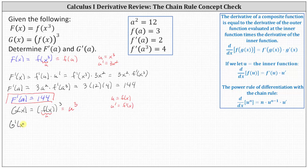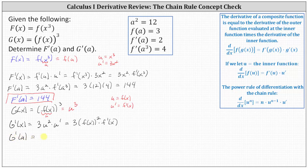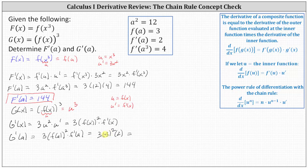G'(x) = 3u² · u', where u = f(x) and u' = f'(x). Therefore G'(x) = 3[f(x)]² · f'(x). So G'(a) = 3[f(a)]² · f'(a). From the given information, f(a) = 3, which gives us 3 × 3² = 3 × 9 = 27, and f'(a) = 2, so G'(a) = 27 × 2 = 54.